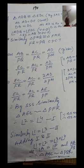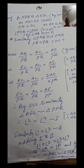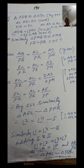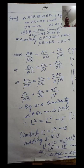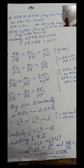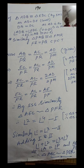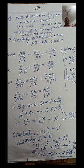By SAS congruency, triangle ADB is congruent to triangle EDC. Therefore EC = AB by CPCT. Similarly, triangle PMQ is congruent to triangle FMR because PM = FM by construction, QM = MR because M is the midpoint, and angle PMQ = angle FMR as vertically opposite angles — so by SAS these two triangles are congruent, giving FR = PQ by CPCT.